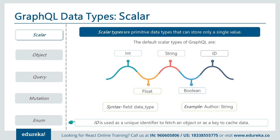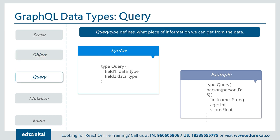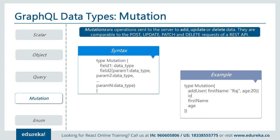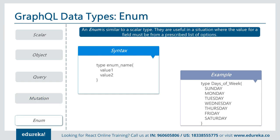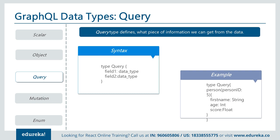Scalar types are primitive data types that store only a single value. The scalar ID is used as a unique identifier to fetch an object or as a key to cache a data object. The object type represents a group where you define the schema and all data types used in GraphQL. Query is similar to a GET request in an API, while mutation is similar to a POST call — mutation handles post, update, and delete operations, and query handles GET. Enum is similar to a scalar type, useful when a field value must come from a prescribed list of options. In short: int for integers, float for decimals, string for text, and boolean for true/false.